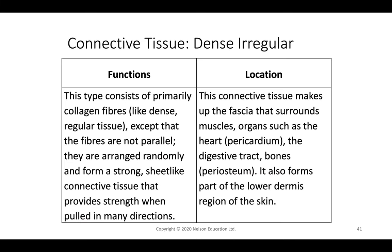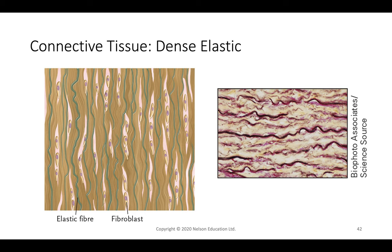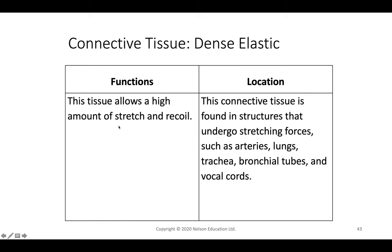Dense elastic tissue can expand and contract due to elastic fibers running through it, providing elastic recoil. It is found in areas that need constant stretching, such as arteries that expand with each heartbeat, lungs during breathing, the trachea, bronchial tubes, and vocal cords.